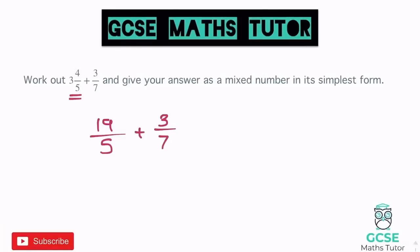When adding and subtracting fractions, we need a common denominator — the number on the bottom must be exactly the same. The lowest common multiple of 5 and 7 is 35. So for the left fraction, times the top and bottom by 7. For the right fraction, times the top and bottom by 5. That gives us 35 on the bottom of both. So 19 times 7 is 133 over 35. You can do some multiplication to the side — 7 times 10 and 7 times 9, add them together.